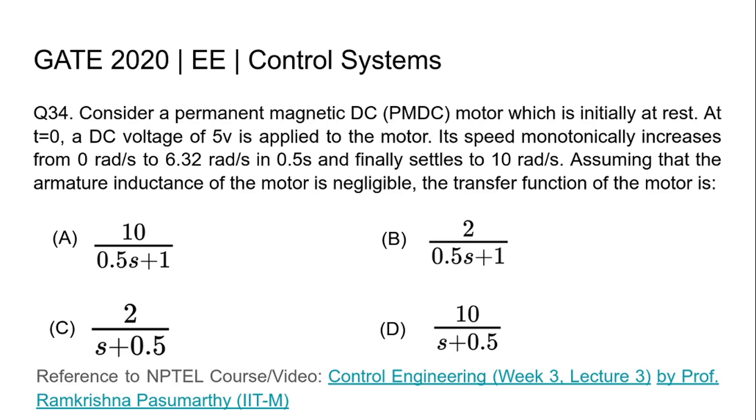Hello everyone, we are given a permanent magnet DC motor which is initially at rest. A DC voltage of 5 volts is applied at time t equals 0. It is seen that the speed monotonically increases from 0 radians per second to 6.32 radians per second in 0.5 seconds and finally settles to 10 radians per second. We are asked to find the transfer function of the motor assuming that the armature inductance is negligible.